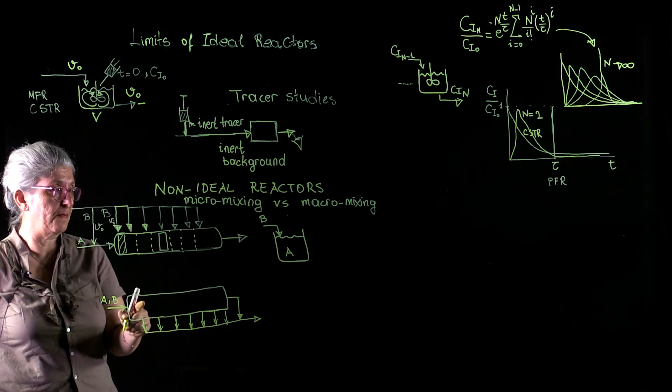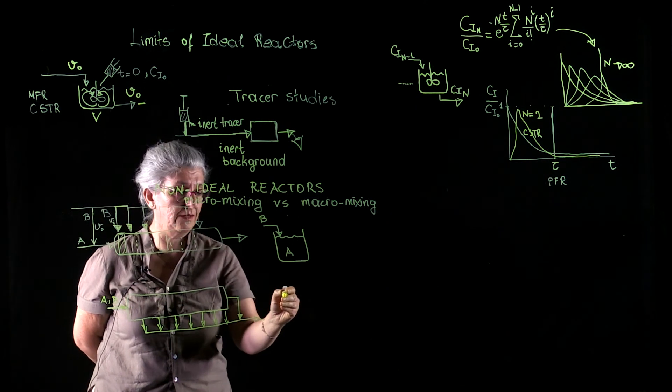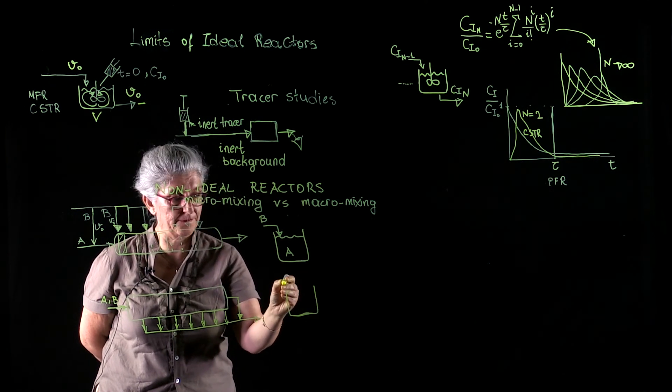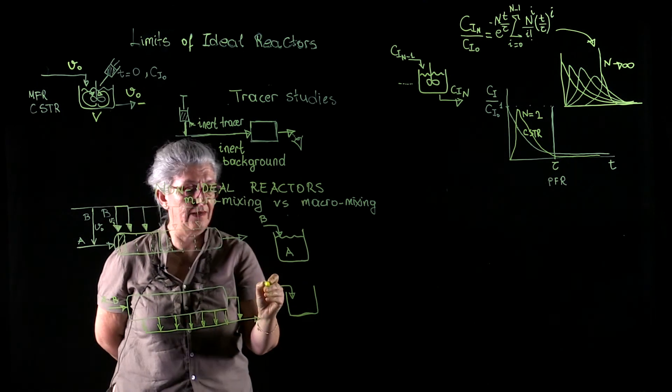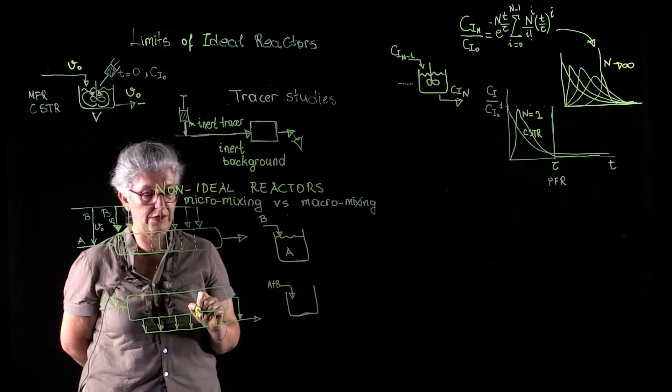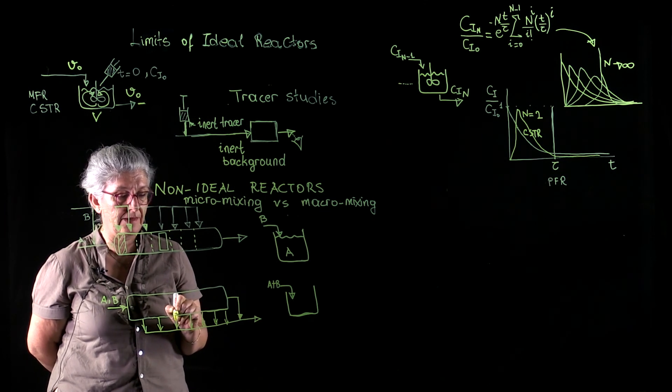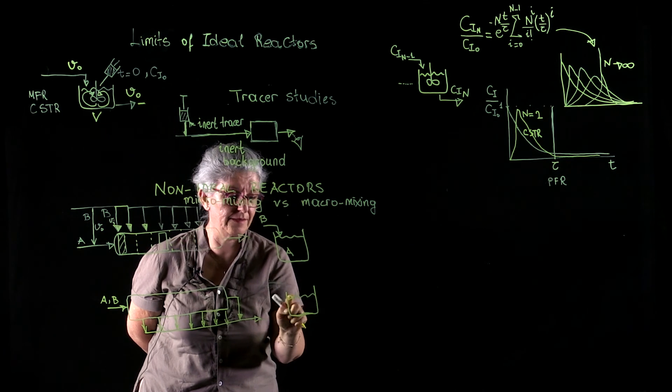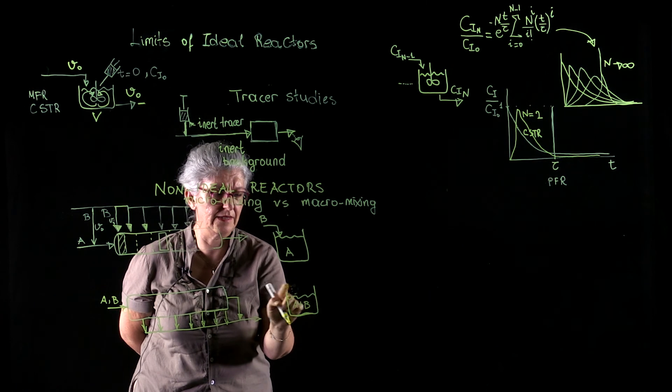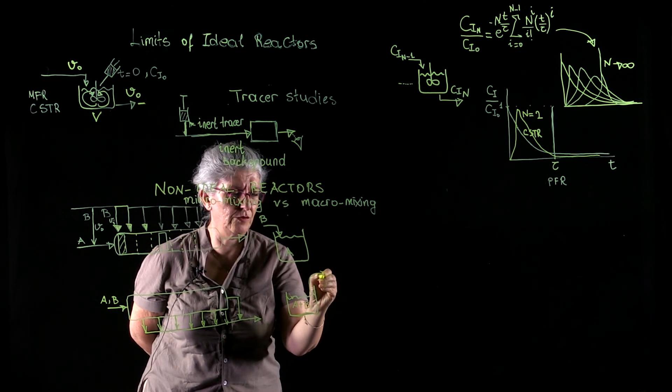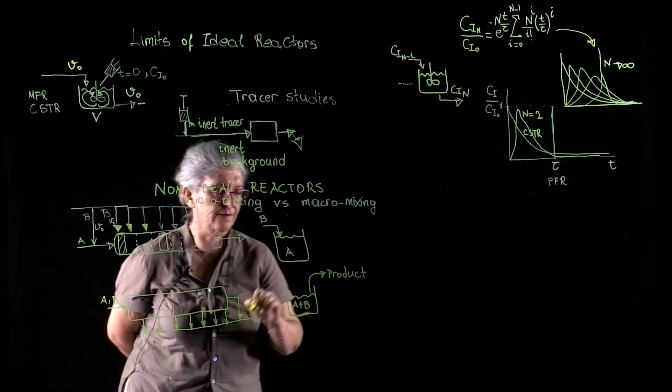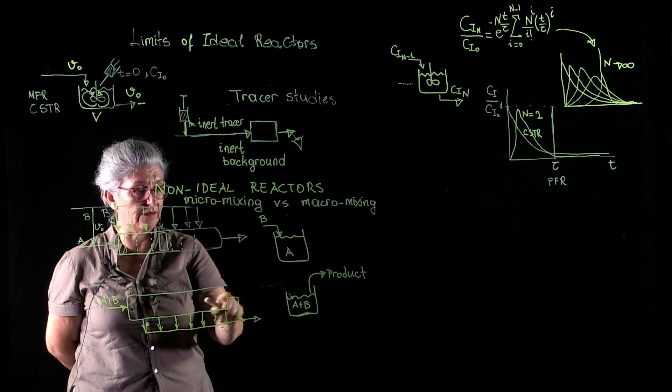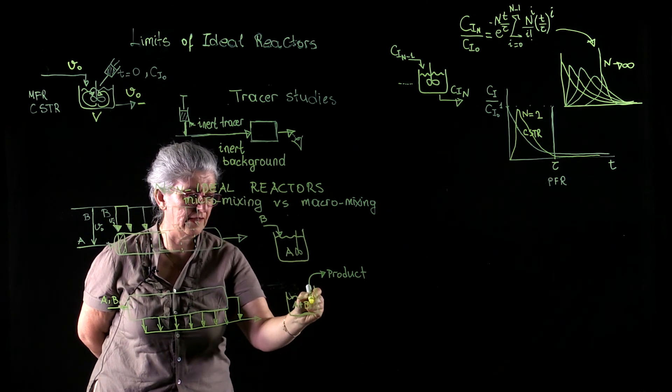This operation is equivalent to a semi-batch operation, where A's and B's are fed initially, and where we gradually remove the product. Under the plug flow reactor, perfect ideal plug flow reactor condition. This is equivalent to an ideal, perfectly stirred, semi-batch reactor operation.